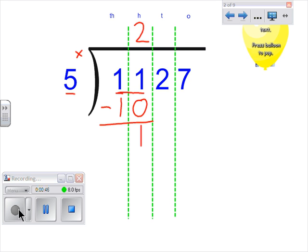Now say, can 5 go into 1? Now, if it can't, then you need to make the number larger by bringing the next digit to the right. Number 2, you need to drop that down. So now we have the number 12.